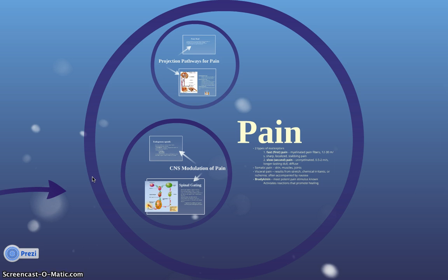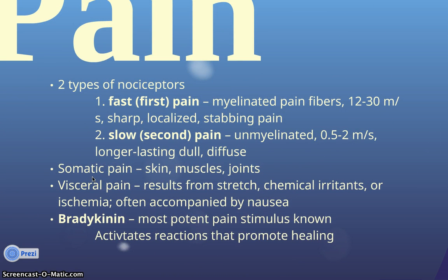Part of the general senses is pain. There are two types of nociceptors. The first is fast pain, which uses myelinated fibers conducting at 12 to 30 meters per second, producing sharp, localized, stabbing pain. The second type uses unmyelinated fibers traveling at half a meter to two meters per second, producing a dull, long-lasting, diffuse pain. Somatic pain is pain felt in the skin, muscles, and joints. Visceral pain results from overstretching of muscles, chemical irritants such as in the stomach, or ischemia, and is often accompanied by nausea.